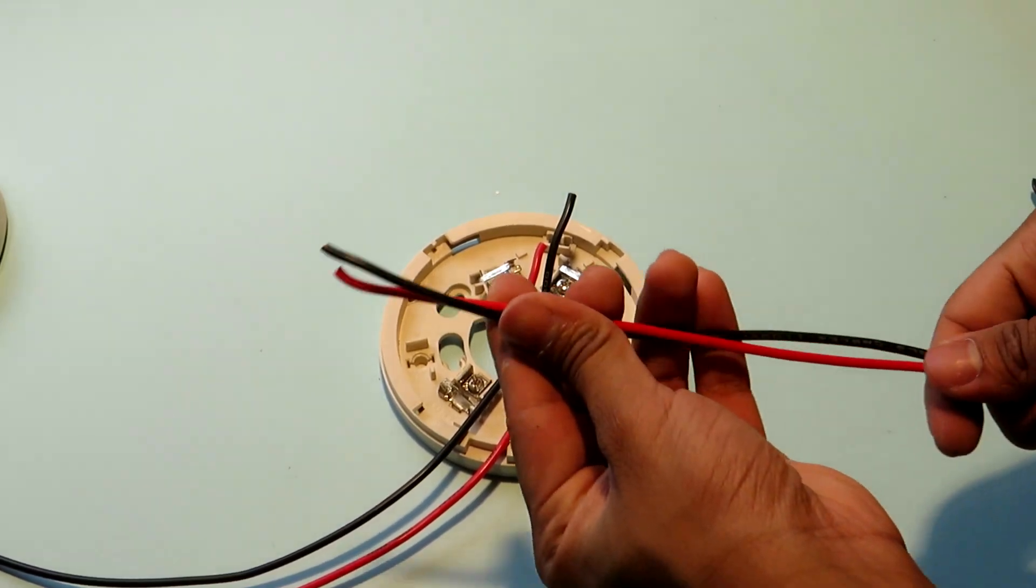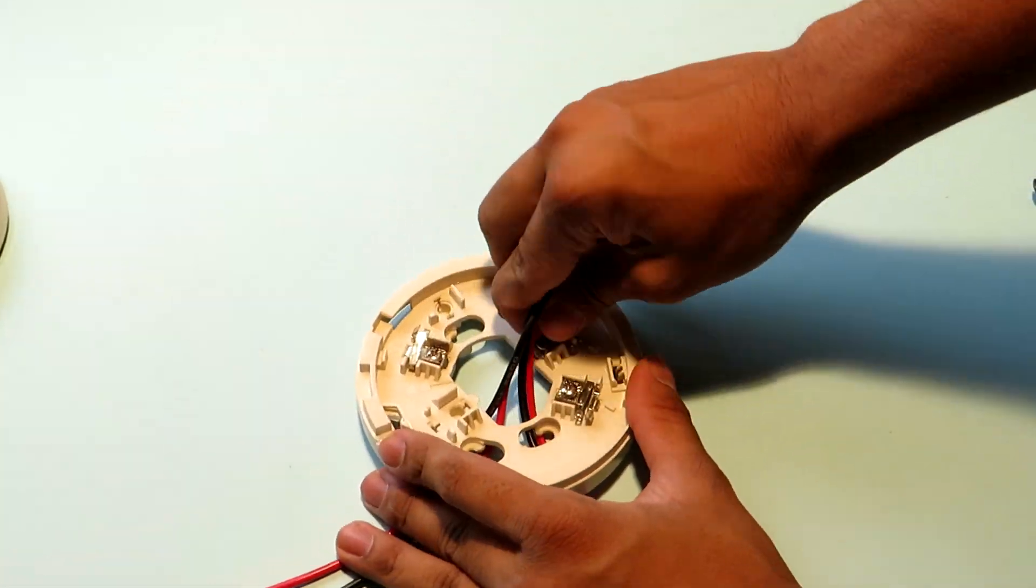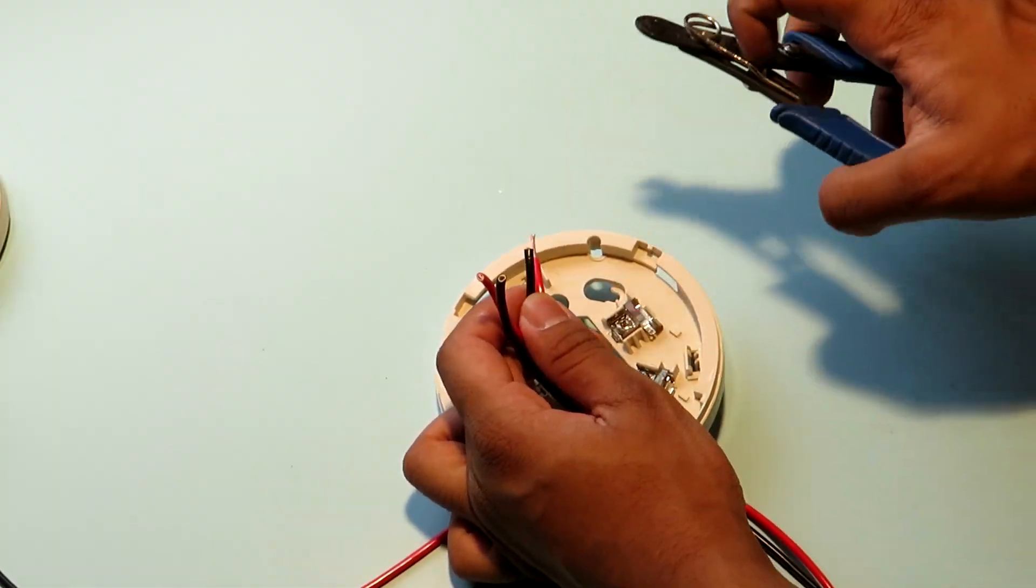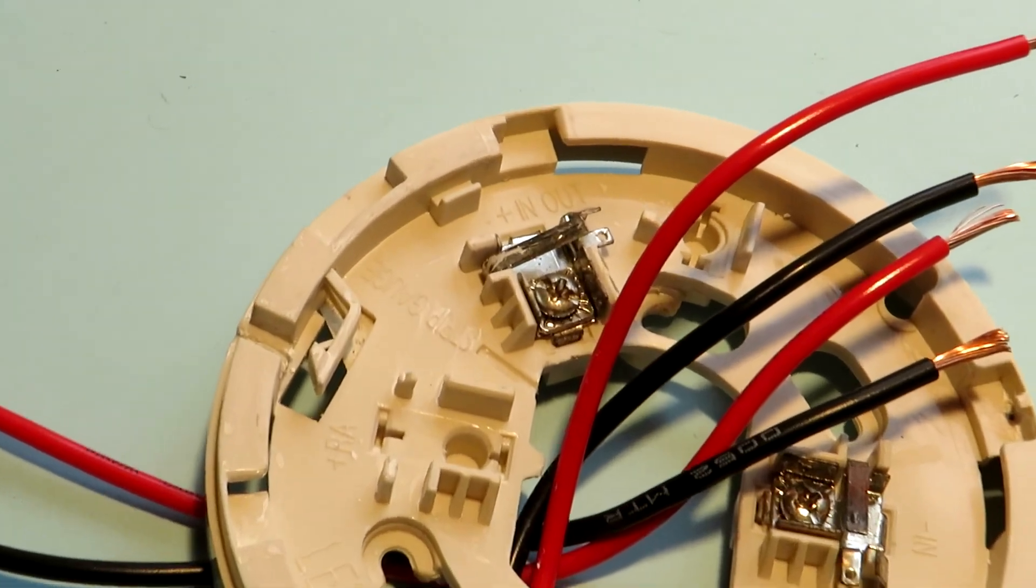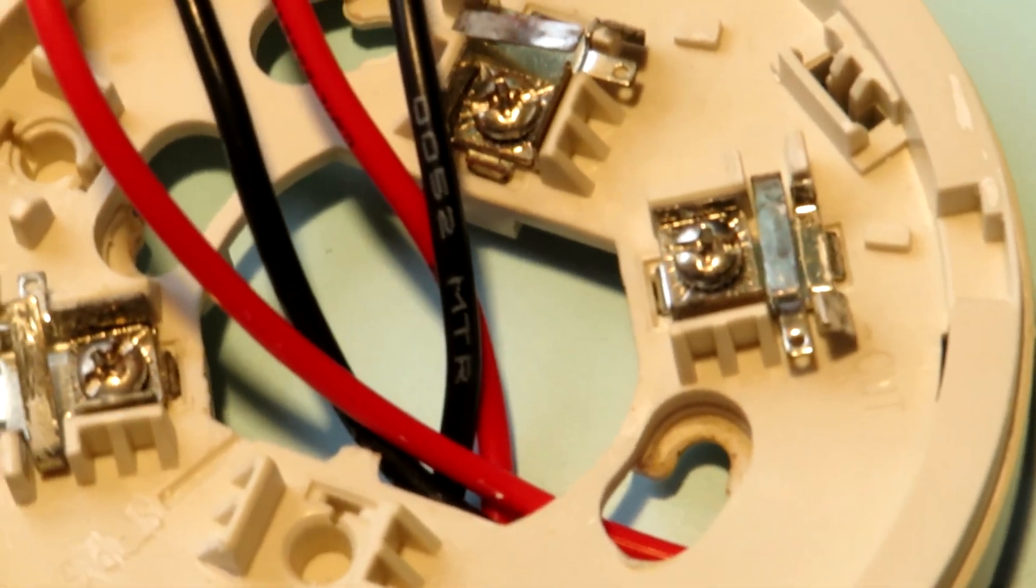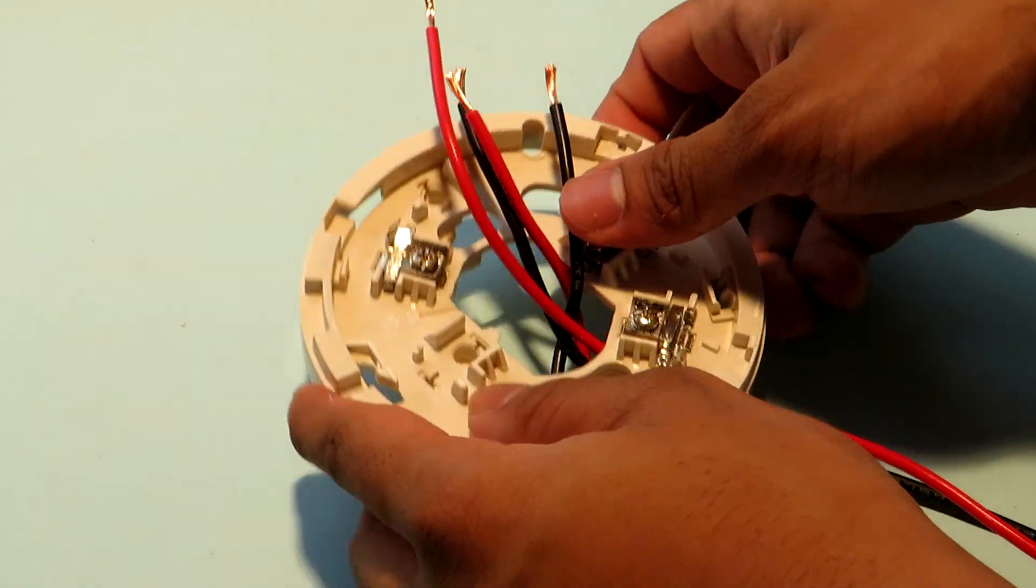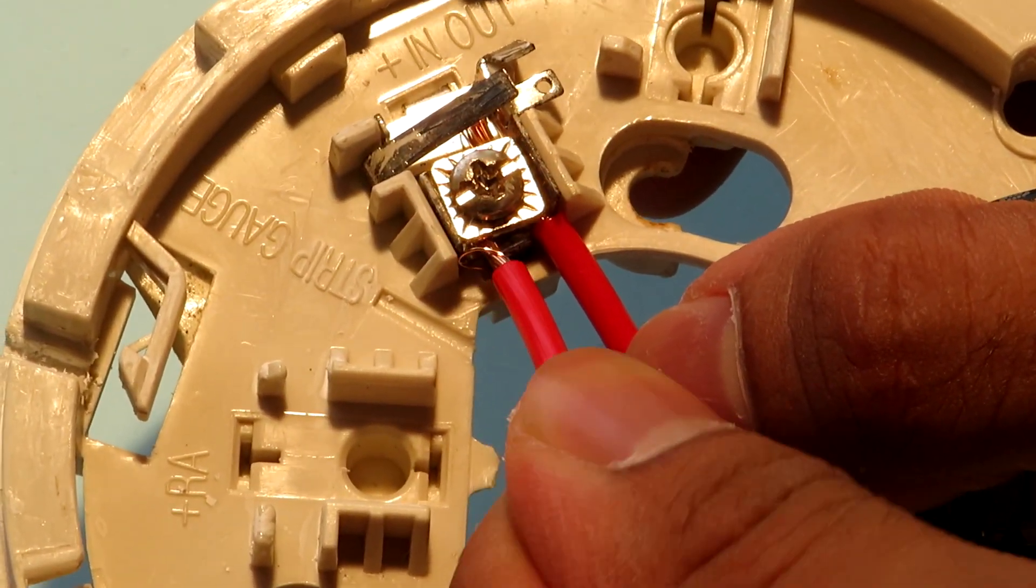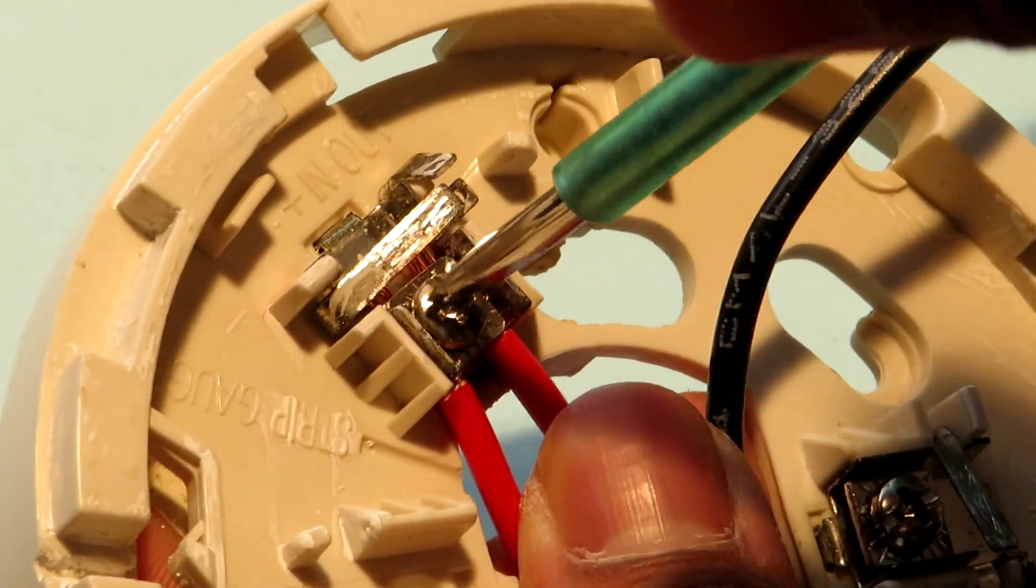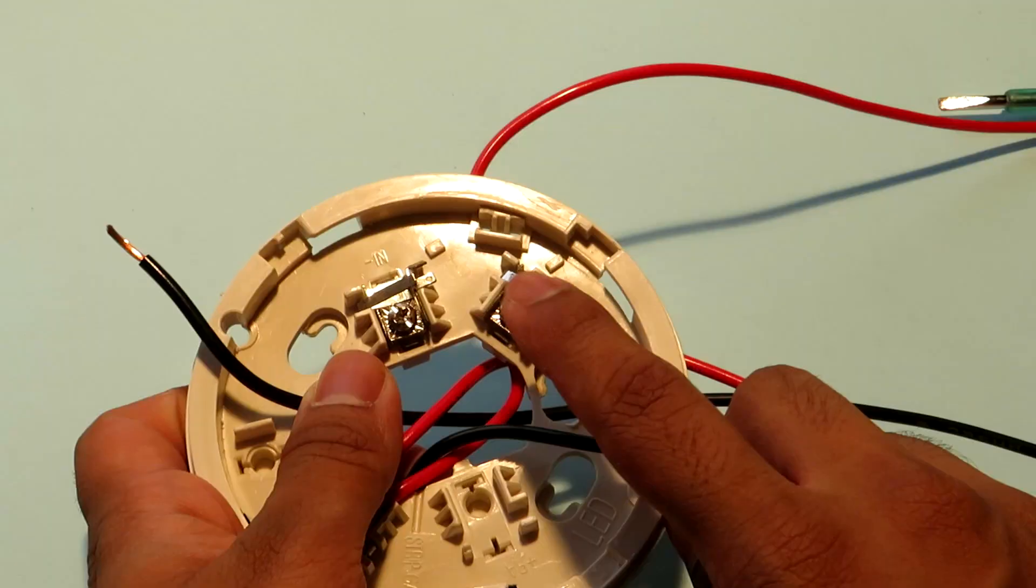Now coming to the connections. So this is our incoming cable from the fire alarm control panel. So first we'll pass all the cables from the back side into the base unit and then skin them. Now we are going to make the connections as per the schematic which I showed you earlier. As far as the positive wire is concerned they both go to the same terminal which is labeled positive in out. So now we have connected our positive wire successfully.